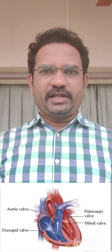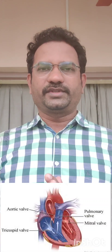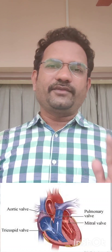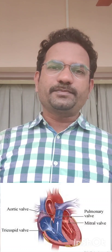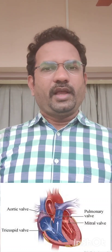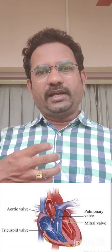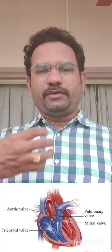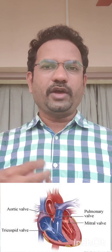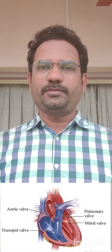This unidirectional flow is enabled by valves. On the right side you have the tricuspid valve, and on the left side you have the bicuspid valve or mitral valve. At the aorta, you have the aortic valve. At the pulmonary artery, you have the pulmonary valve.